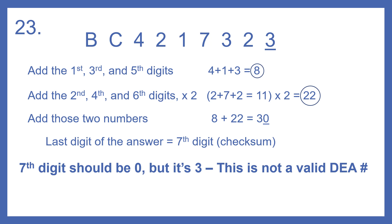Now we'll look at the DEA number that was not valid: BC4217323. To do the checksum, we add the first, third, and fifth digits: 4 plus 1 plus 3 is 8. Then we add the second, fourth, and sixth digits and multiply by 2: 2 plus 7 plus 2 is 11, times 2 is 22. Adding those together: 8 plus 22 is 30. The ones place gives us a zero, but the seventh digit is 3 — so this is not a valid DEA number.